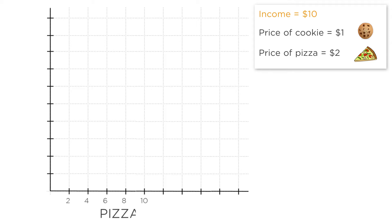On the horizontal axis, we have the number of pizza slices. This point here means buying one pizza slice. This point means buying two pizza slices, and so on. On the vertical axis, we have the number of cookies. So this point is one cookie, this point is two cookies, and so on.